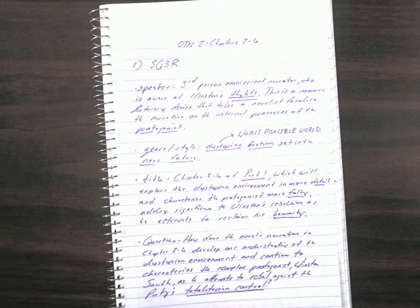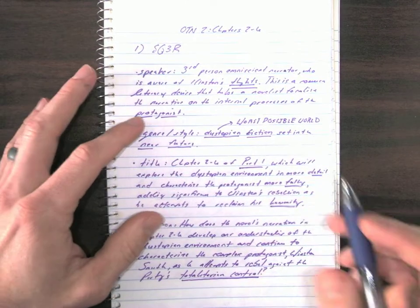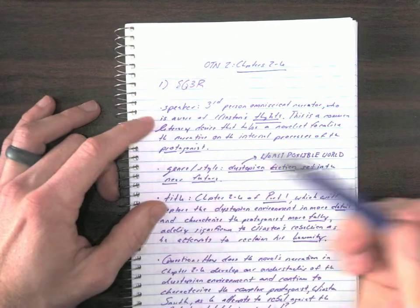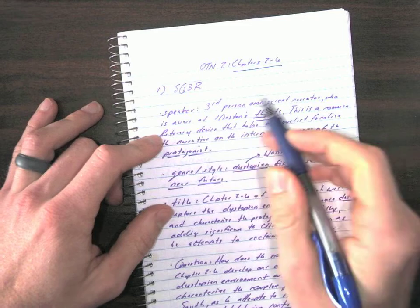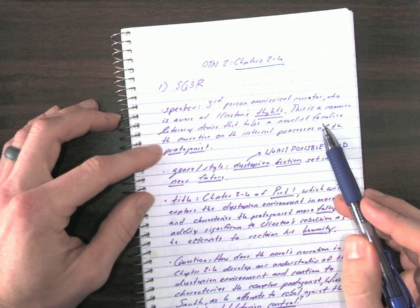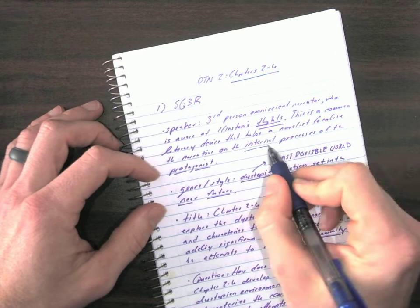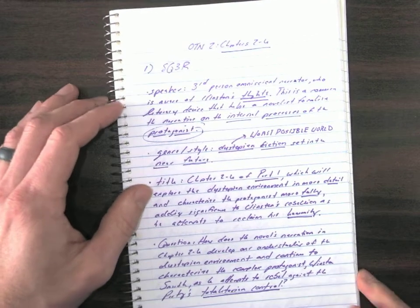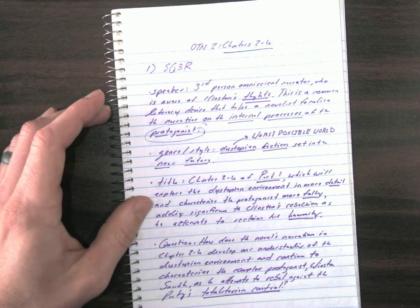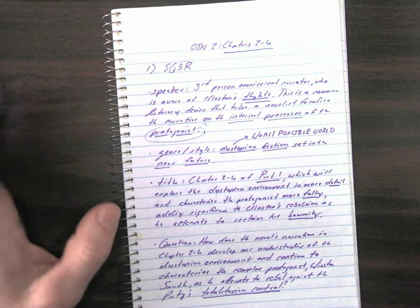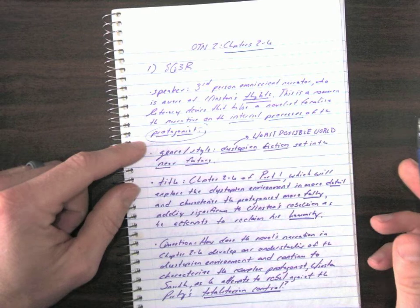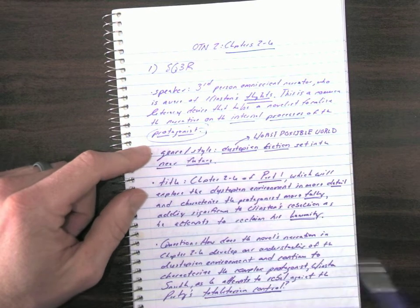But before we do that, let's just go ahead and complete our SQ3R, and then on Wednesday and Thursday, we'll work through all of these analytical points. Let's jump into it. So, as usual, we want to start by just reminding ourselves who is speaking in the portion of text that we're studying, which is chapters 2 through 6 of part 1. Our speaker is just the third-person omniscient narrator who is aware of Winston's thoughts. This is a common literary device that is used to help a novelist focalize the narrative on the internal processes of the protagonist. So, in other words, the narrator knows everything that the protagonist, Winston Smith, is thinking or feeling, and the narrator has access to the deepest, darkest thoughts of the protagonist.